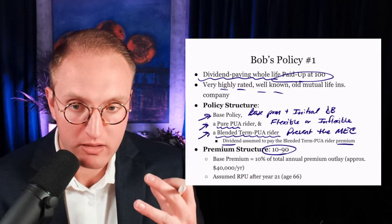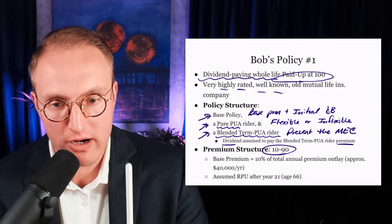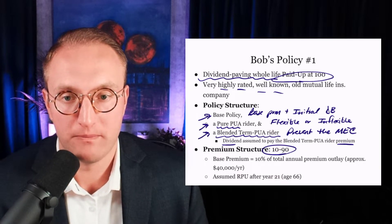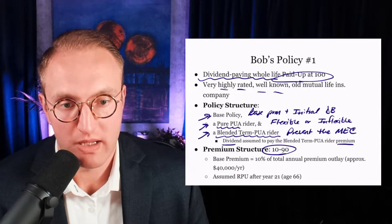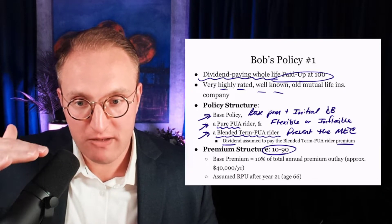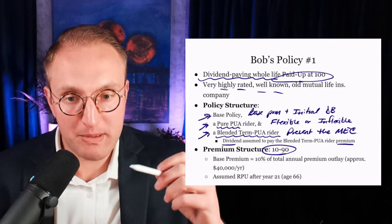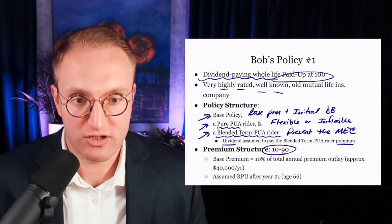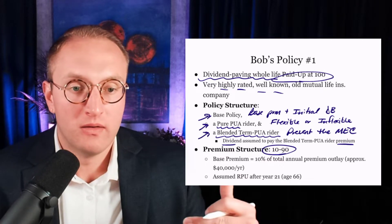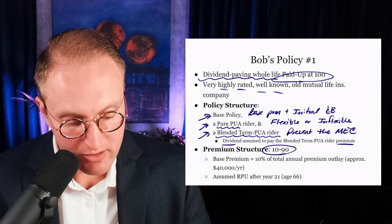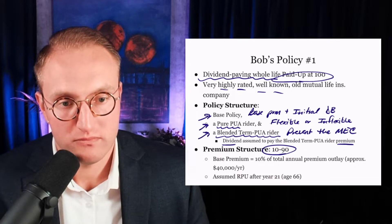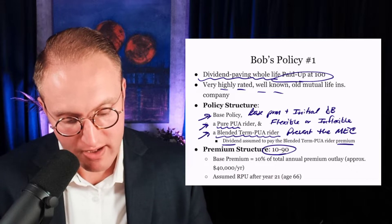Ostensibly over time with these blended term PUA riders, the amount of temporary death benefit will decrease and the amount of the rider premium going to buy permanent death benefit will increase — such that eventually we'll reach a crossover point where no longer does any of that blended term PUA rider premium need to get temporary death benefit; it'll just get permanent death benefit. So we've got base policy, pure PUA, and a blended term PUA rider. It's a 1090 structure. The premium is 40 grand per year.